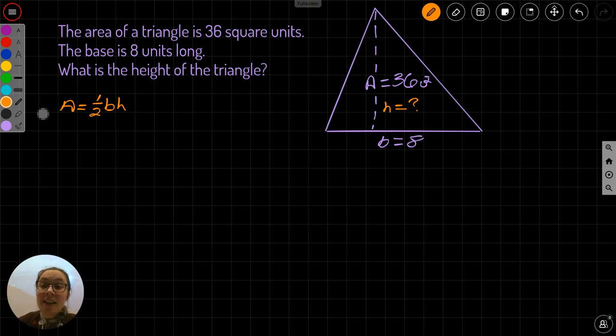Anyway, we're going to plug in what values we already know. What do we know? Well, we know what A equals because it says the area of the triangle is 36 square units. So A equals 36, just like I wrote here. 36 equals...